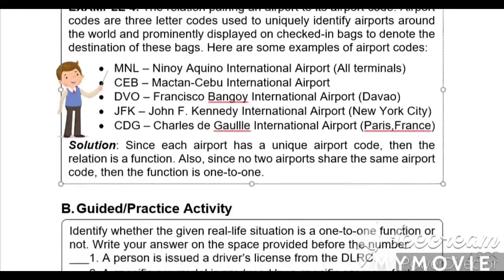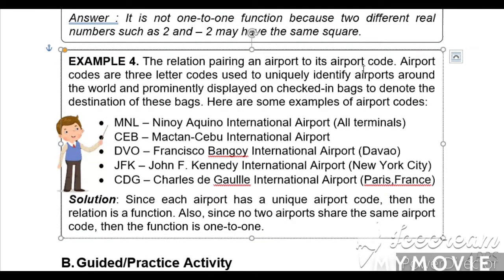Example number 4: the relation pairing an airport to its airport code. Airport codes are three-letter codes used to uniquely identify airports around the world. Examples: MNL is Ninoy Aquino International Airport; CEB is Mactan Cebu International Airport; DVO is Francisco Bangoy International Airport, Davao; JFK is John F. Kennedy International Airport, New York City; CDG is Charles de Gaulle International Airport, Paris, France. Since each airport has a unique airport code, the relation is a function, and since no two airports share the same code, the function is one-to-one.